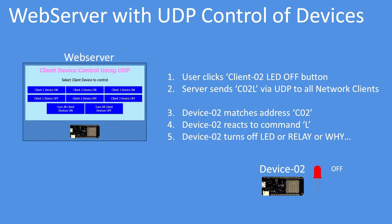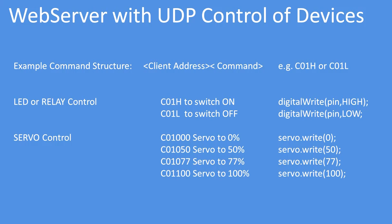You can make up your own command structure. Mine is very simple: it's the client address followed by the command, so client address 'co1' with command high or low. For example, simple LED or relay control — 'client 01 high' switches on a digital output pin high, matched on reception of that command; similarly for low.